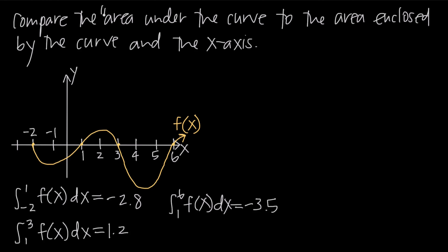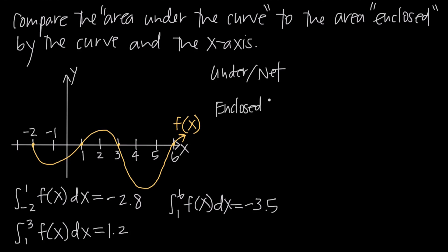Area under the curve is by far the most common way to look at area, and when we talk about area under the curve, it's also considered net area. So when you hear area under the curve, think net area. Versus area enclosed by the curve and the x-axis — that would be gross area, the same thing as gross area.